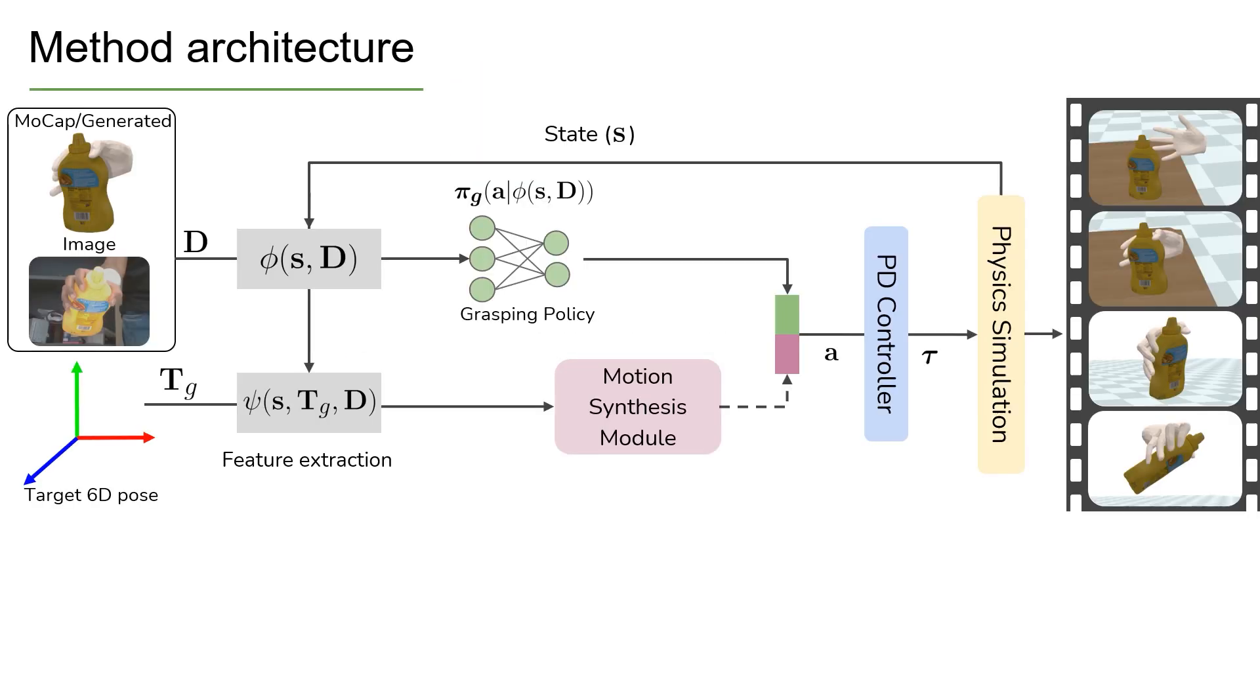We propose a reinforcement learning based approach that leverages a physics simulation to solve the dynamic grasp synthesis task. We split the task into two distinct phases of grasping and motion synthesis.